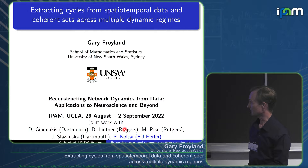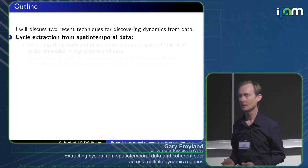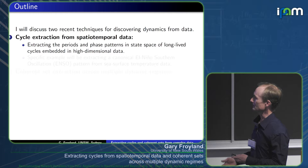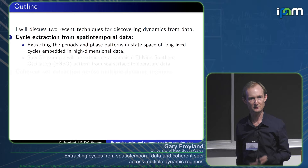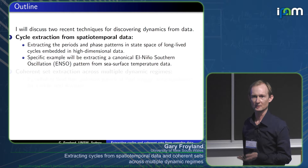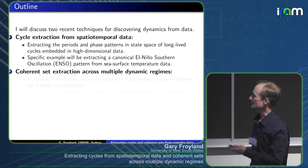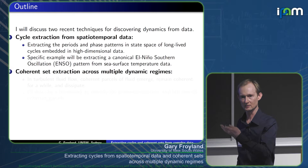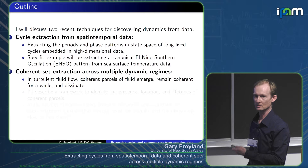What pulls these two together is they're both means of extracting or discovering dynamics from data. The first is about cycle extraction — from your data, you want to extract the periods and phase patterns in state space from particularly long-lived cycles. The specific example I'll spend a lot of time on is the El Niño Southern Oscillation pattern, and we're going to extract this from sea surface temperature images.